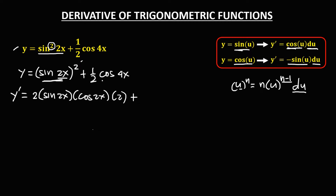For the second term, we bring down the one-half and take the derivative of cosine 4x. Since the derivative of cosine is negative sine, we get negative sine 4x, times the derivative of 4x, which is 4.